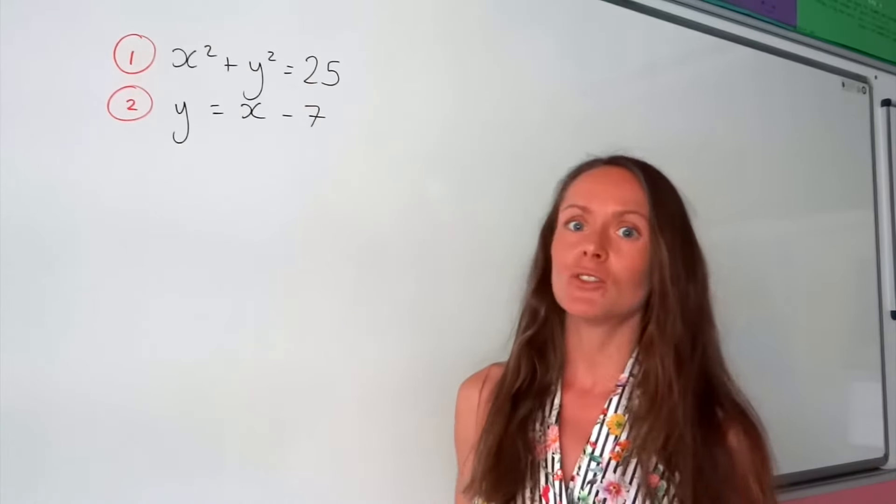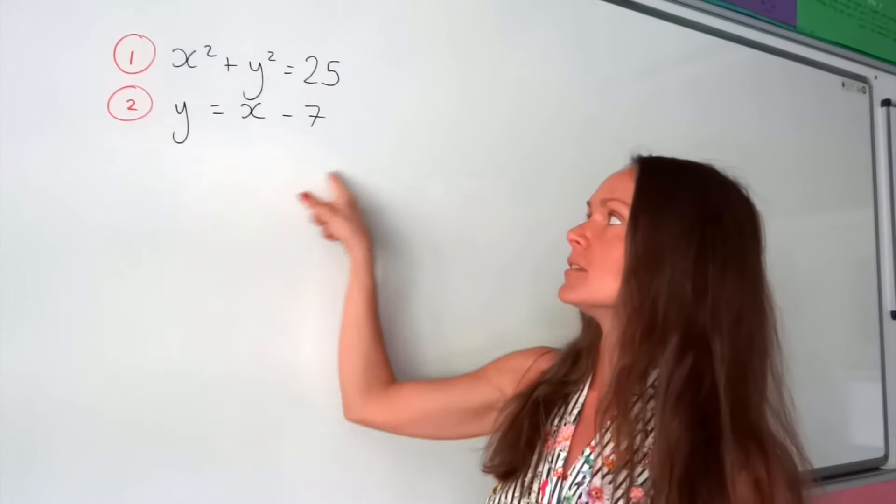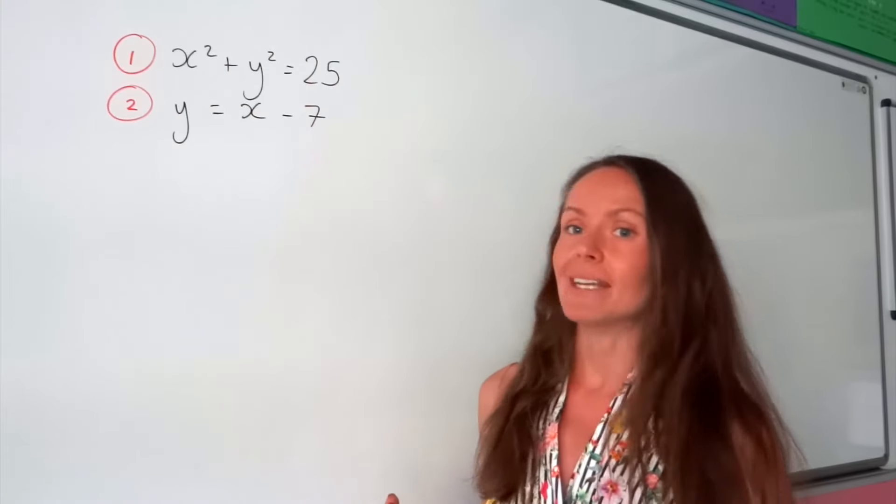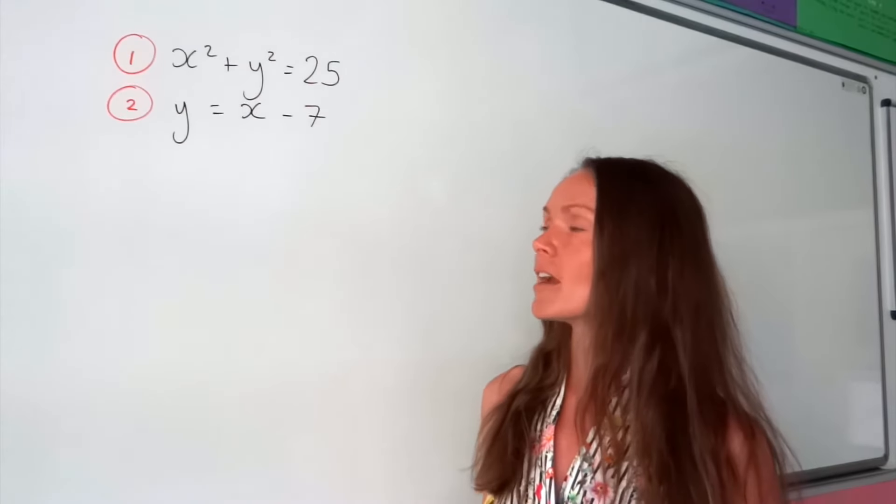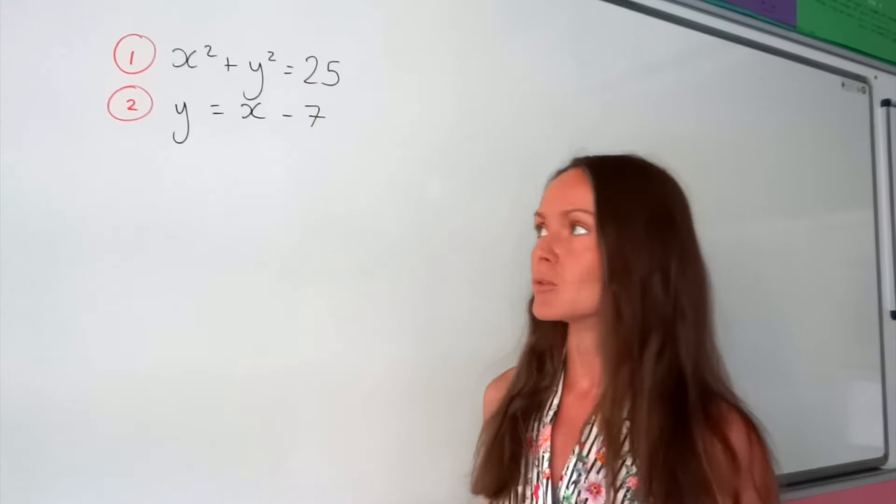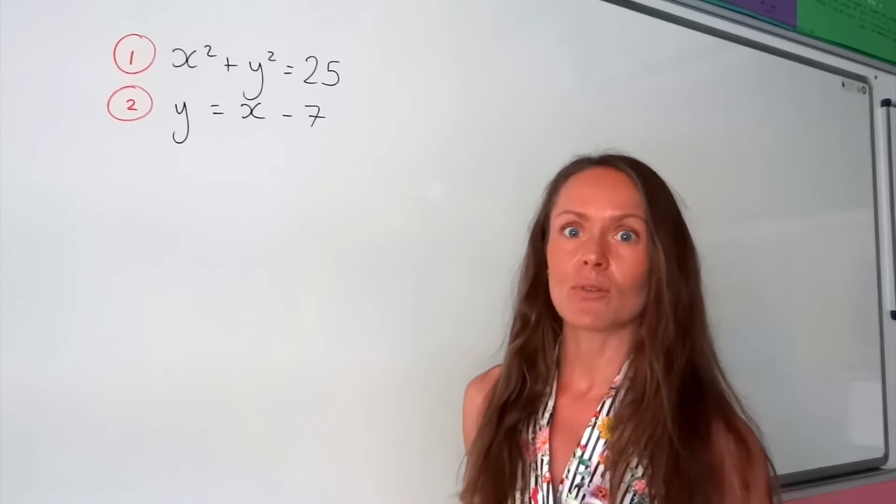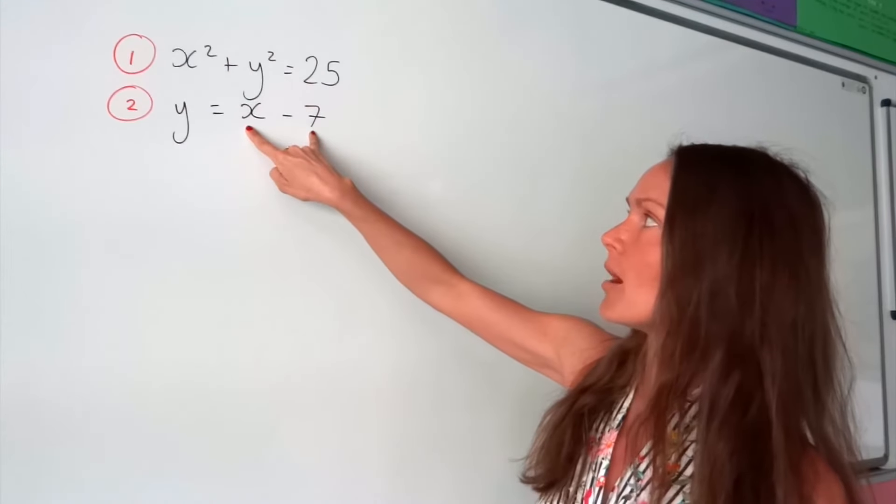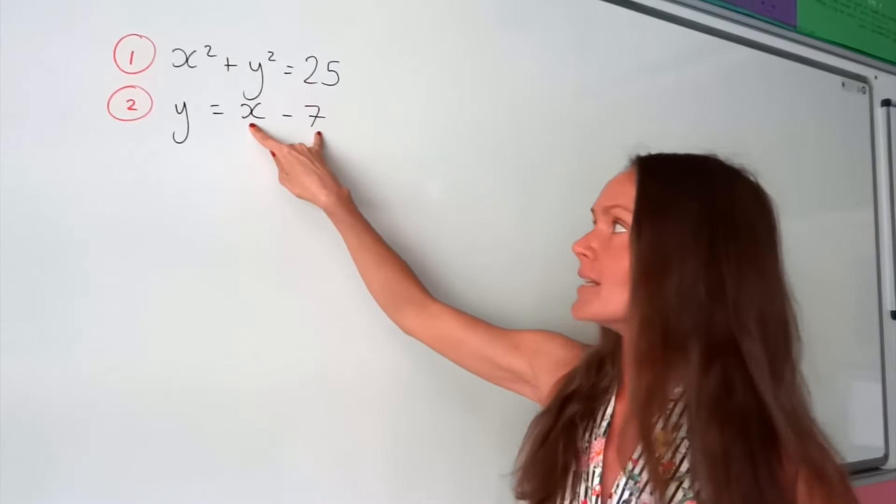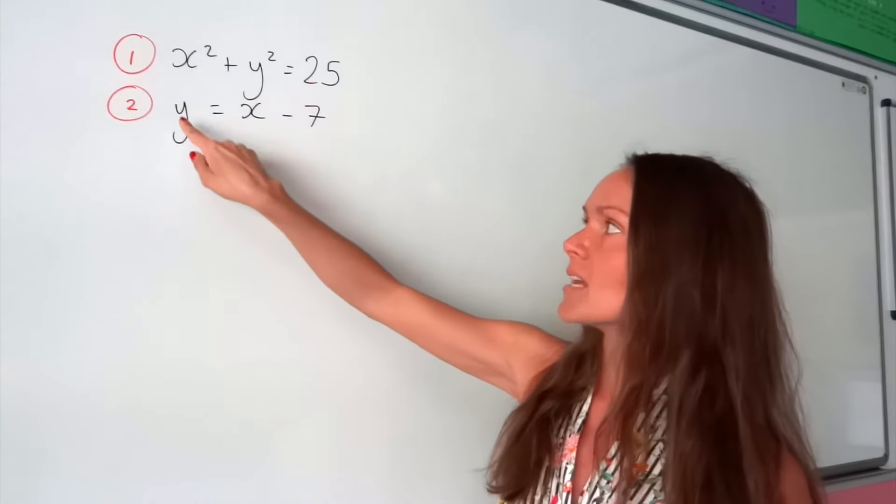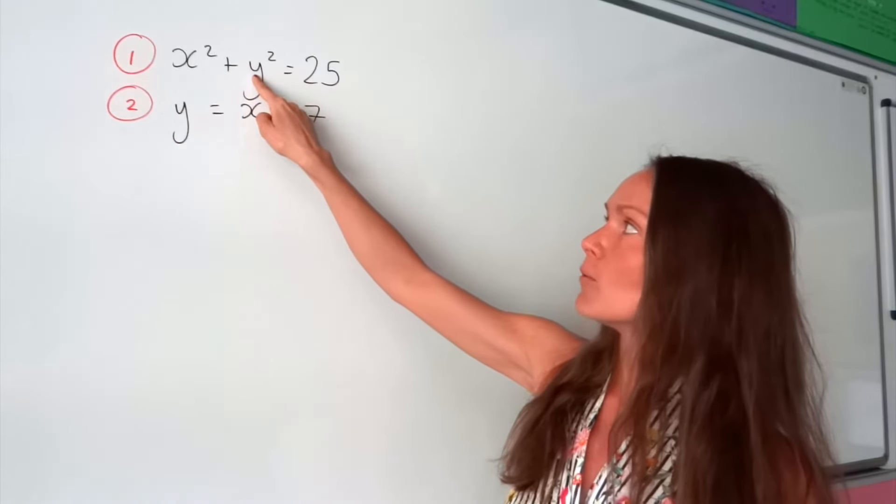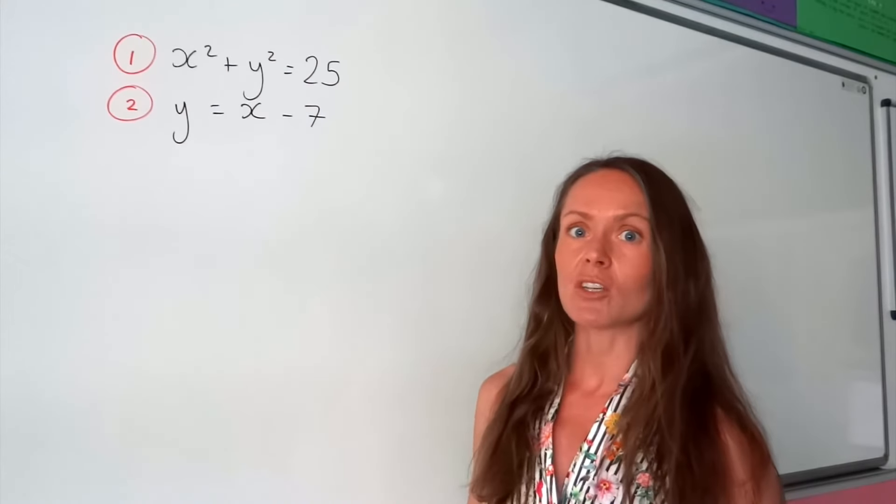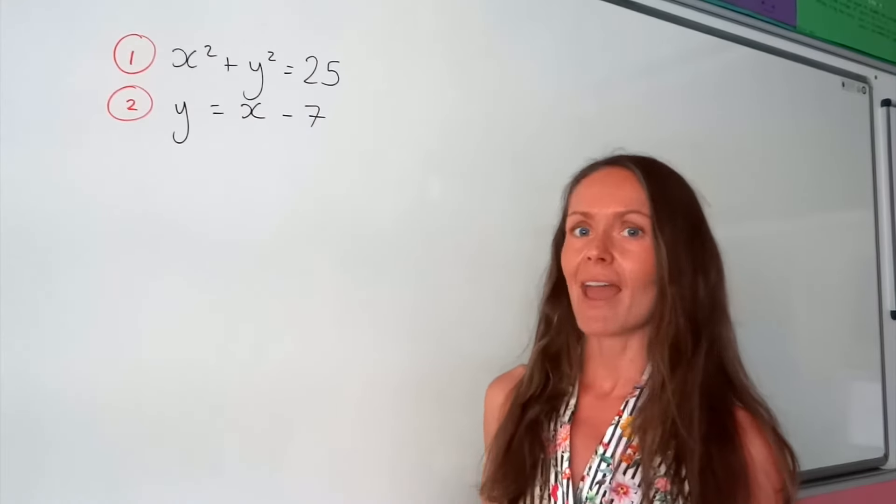In order to do this, we need to substitute that second equation, the linear one, into the quadratic equation above. Fortunately, our second equation is already organized to say y equals, which is great. It should either say y equals or x equals to start with, and then we can substitute this part into the equation here. Remember, x minus 7 is just the same as y. So we can change that value of y to x minus 7 so that we only have an equation with x as the unknown, and then we can solve to find x.